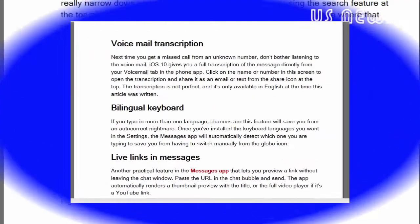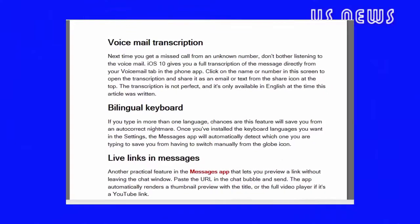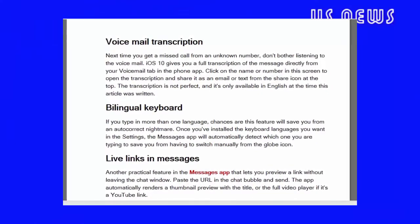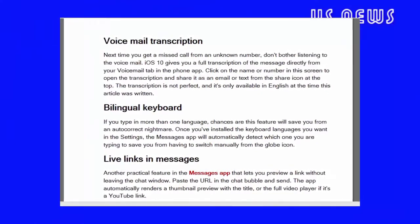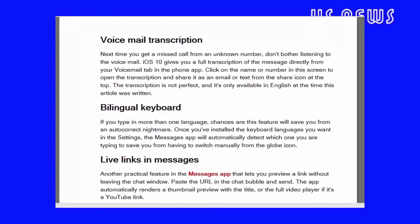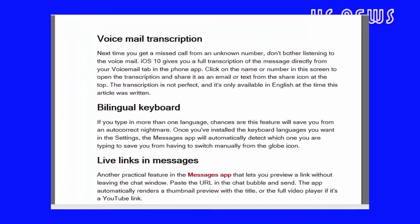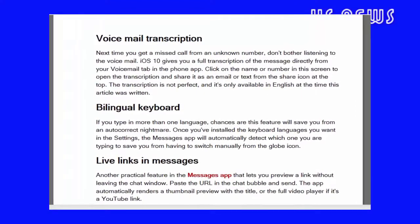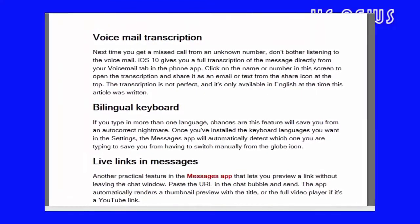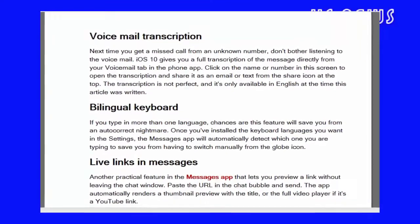Voicemail Transcription: next time you get a missed call from an unknown number, don't bother listening to the voicemail. iOS 10 gives you a full transcription of the message directly from your voicemail tab in the Phone app. Click on the name or number on this screen to open the transcription and share it as an email or text from the share icon at the top. Note: the transcription is not perfect and is only available in English at the time of writing.